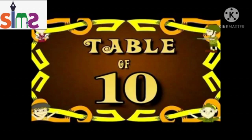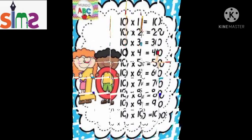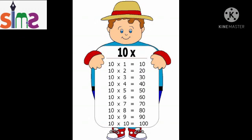Let's start. 10 ones are 10, 10 twos are 20, 10 threes are 30, 10 fours are 40, 10 fives are 50, 10 sixes are 60, 10 sevens are 70, 10 eights are 80, 10 nines are 90, 10 tens are 100.